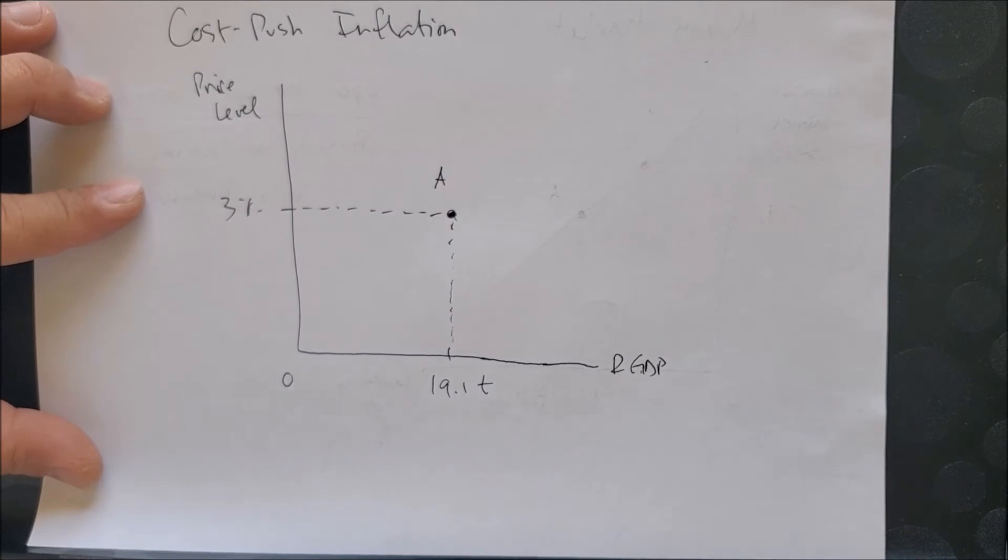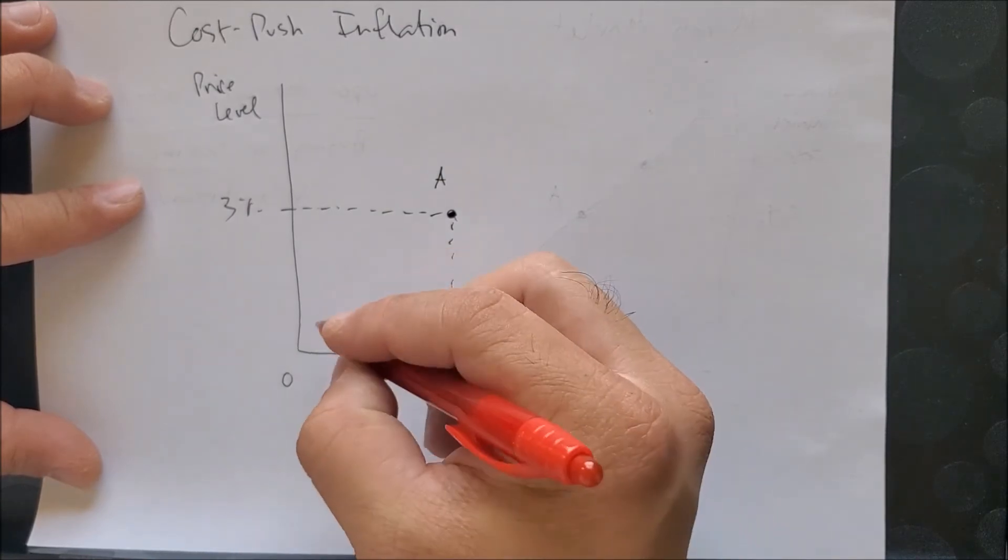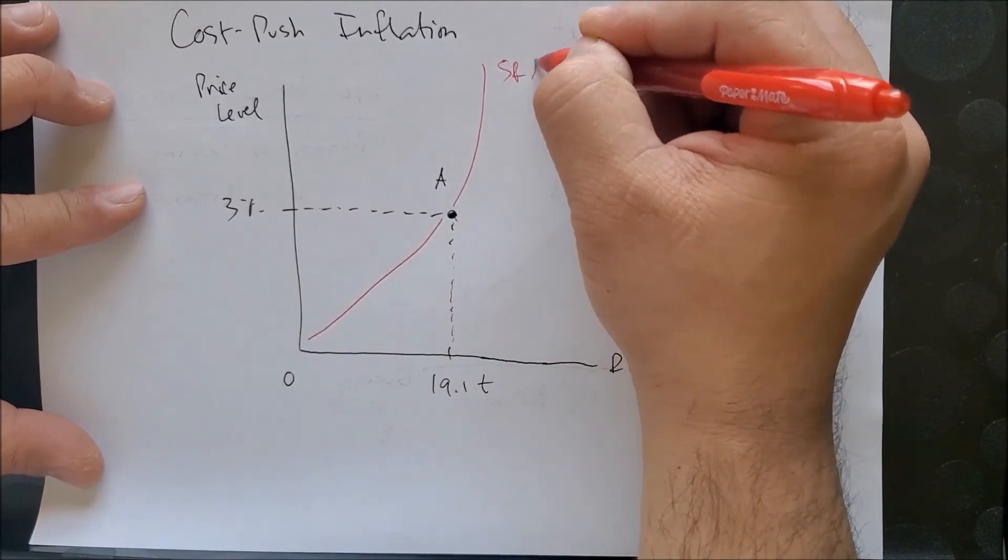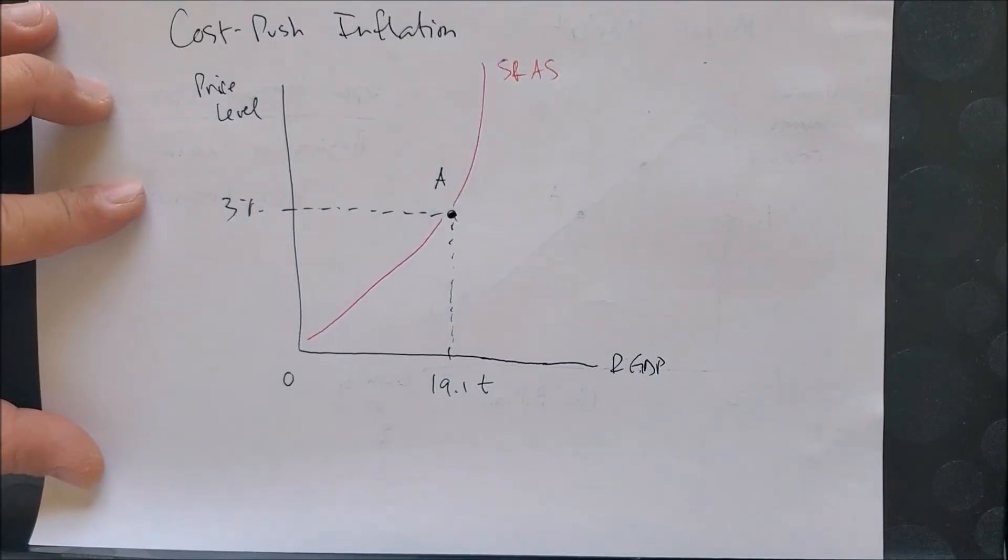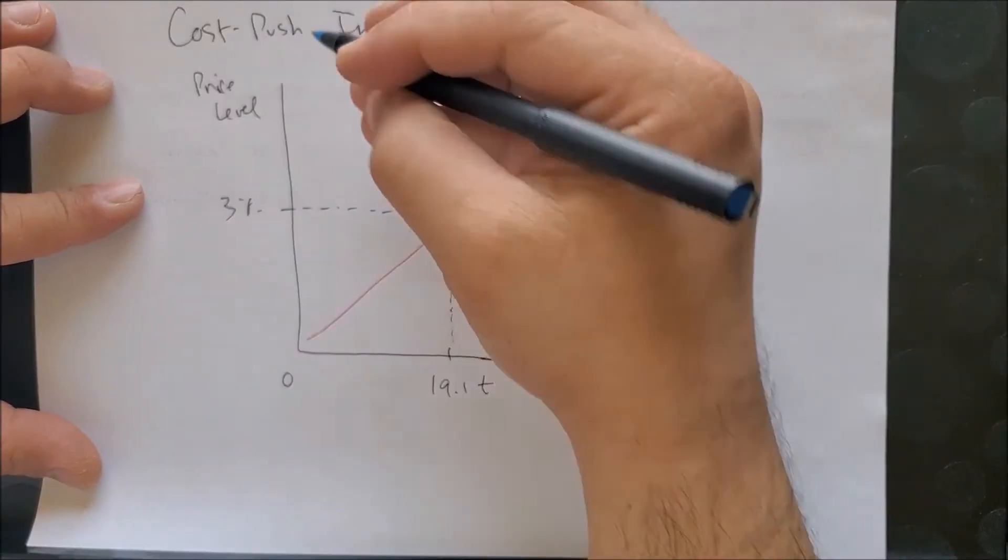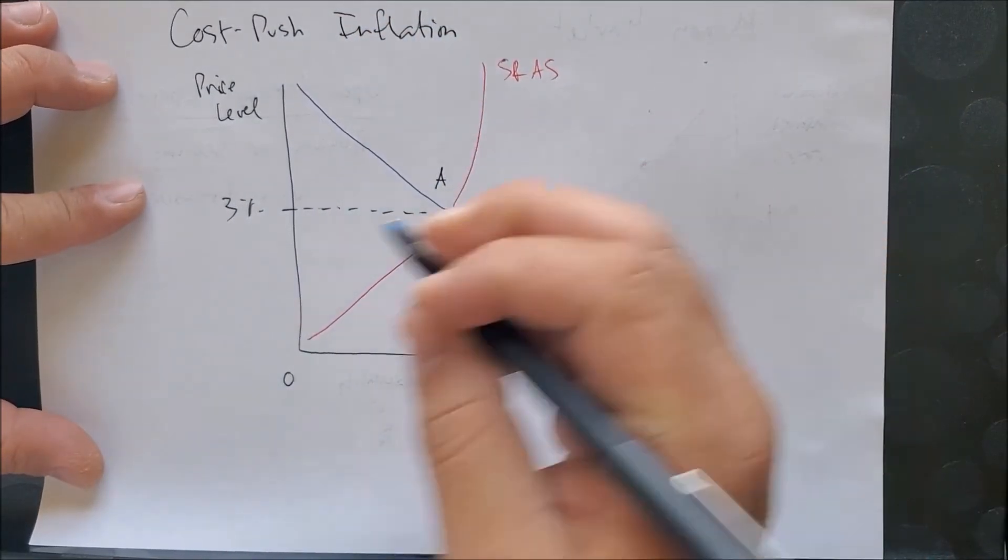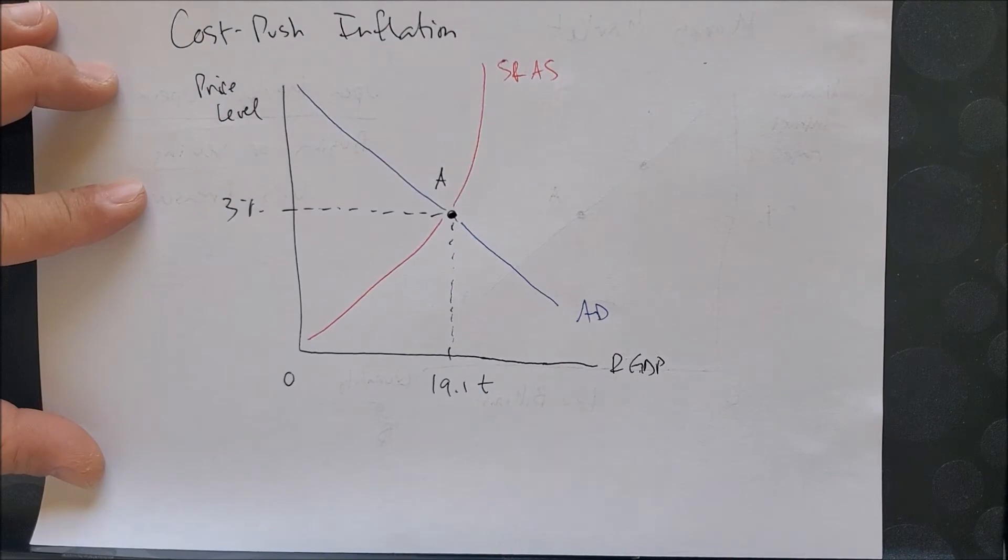We have a very curvy short-run AS curve and our aggregate demand curve as downward sloping. We're not going to focus on AD but rather on SRAS.